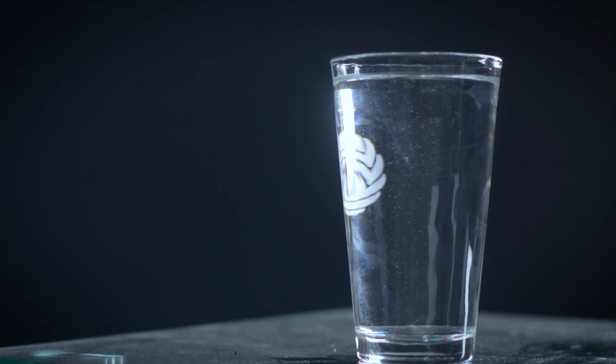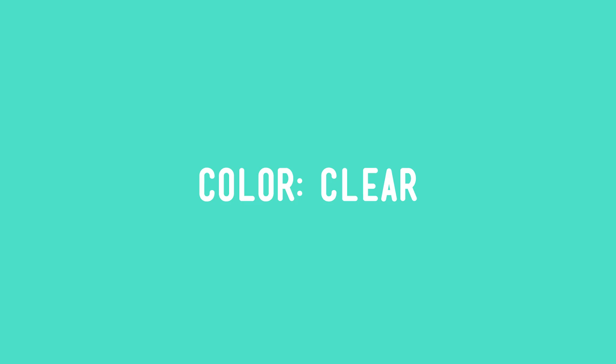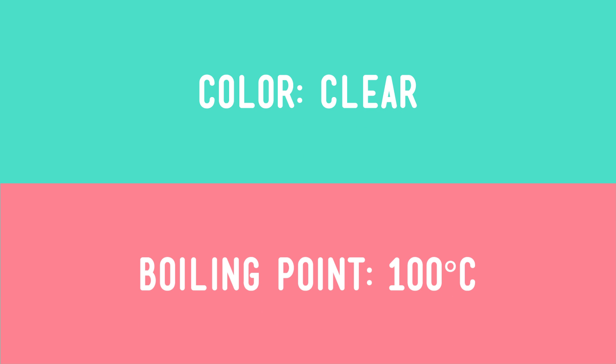This material is a liquid, and its properties include having a color that's, well, clear. And at sea level, its boiling point is 100 degrees Celsius. This is exactly how you'd expect water to look and act in everyday environments, like in your kitchen, or in a restaurant, or in someone's backyard on a picnic table. But what about in not-so-normal environments?